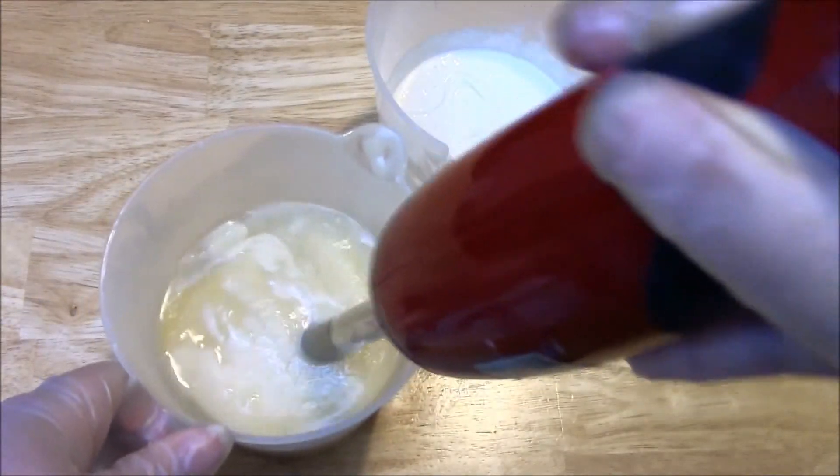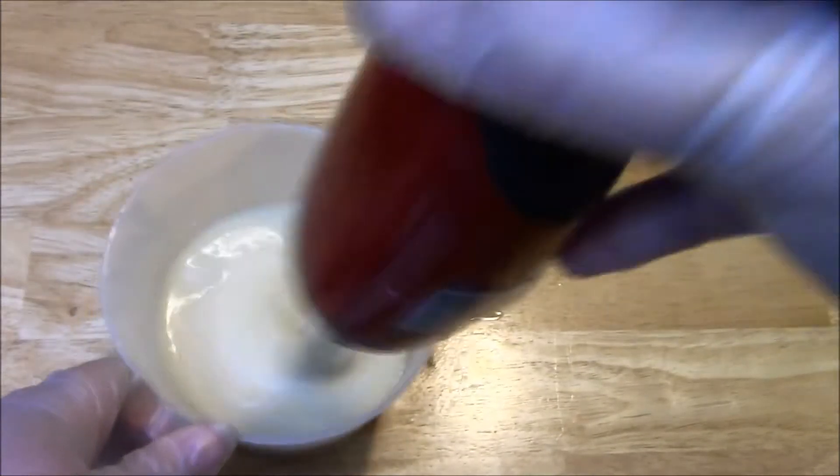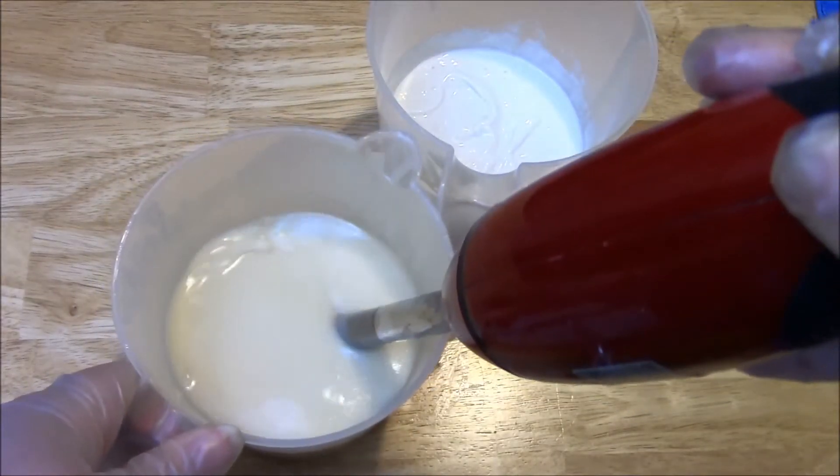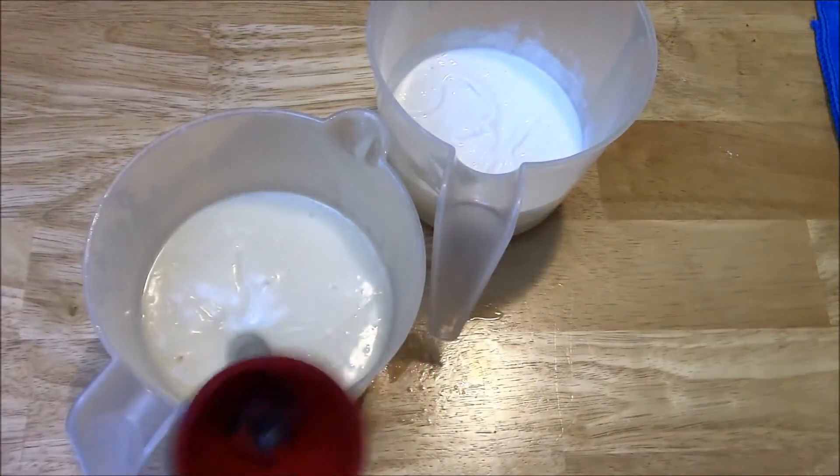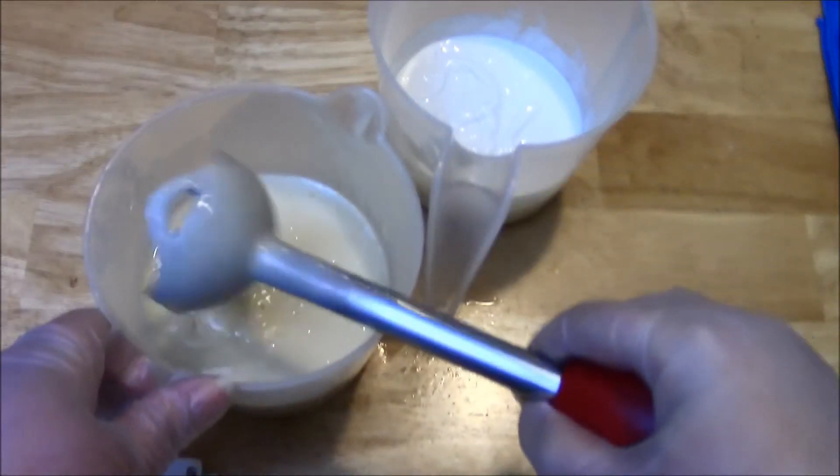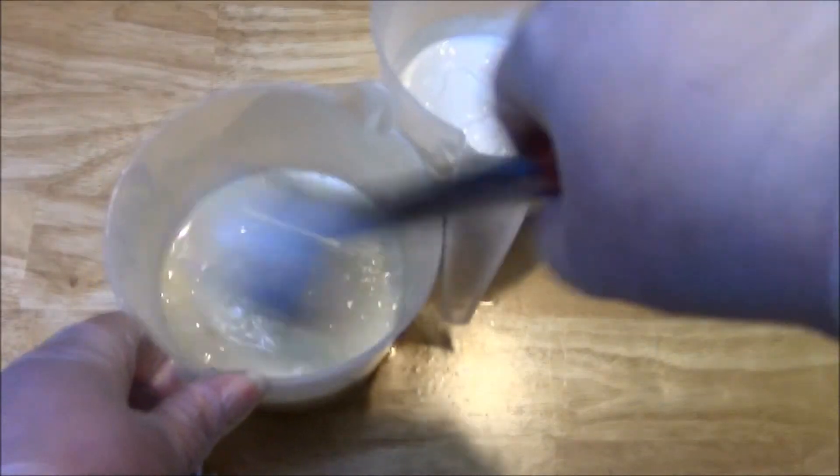And then here I'm just mixing up the uncolored portion. And what I'm going to do is kind of an in-the-pot swirl, but you'll see since the white thickened it's going to give it a really unique pattern.